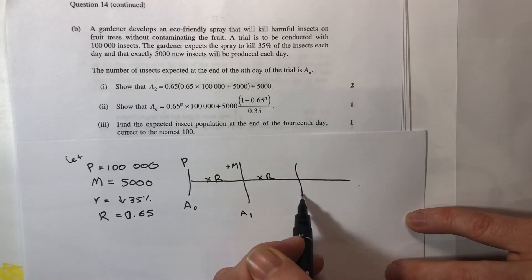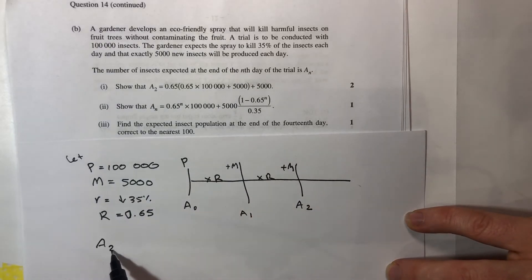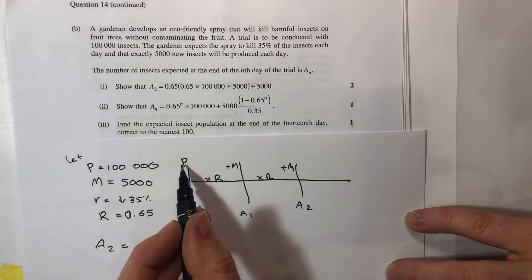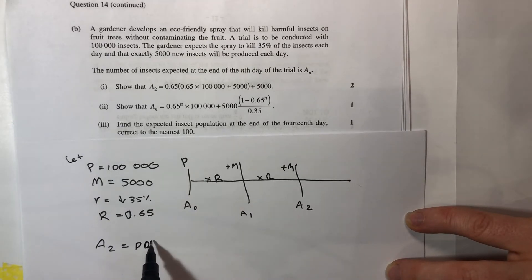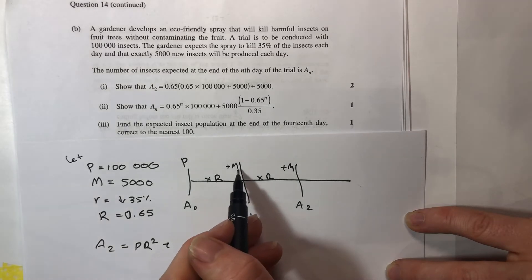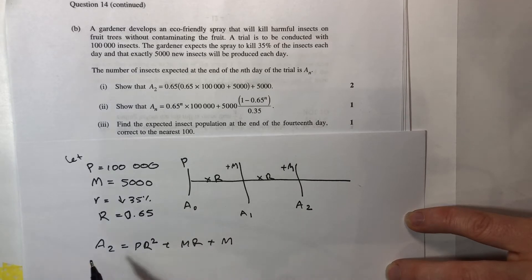Time passes again but I add another one in. So at A2, all I need to do is read across my inputs. So A2 equals P times R times R, PR squared plus M times R plus that final M on that last leg.